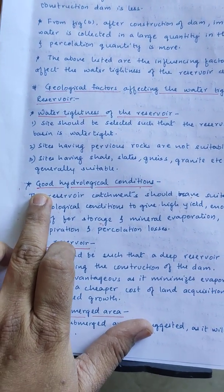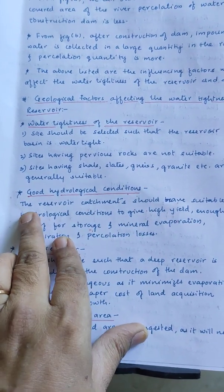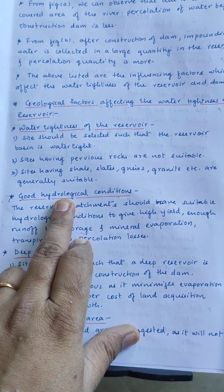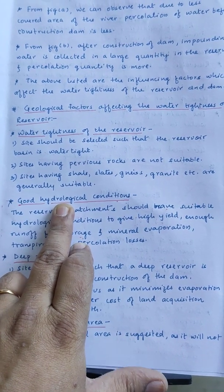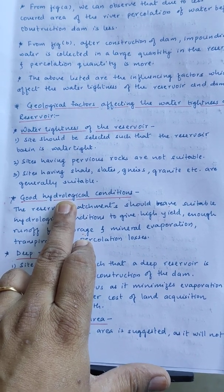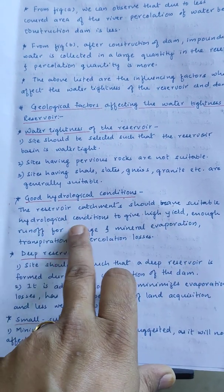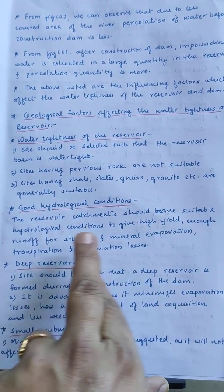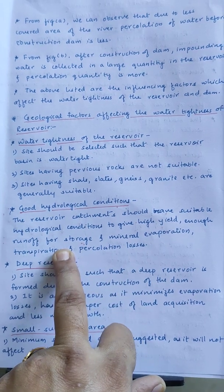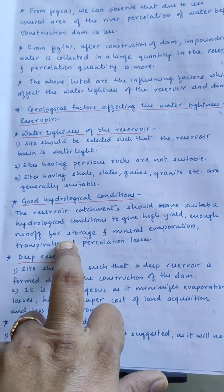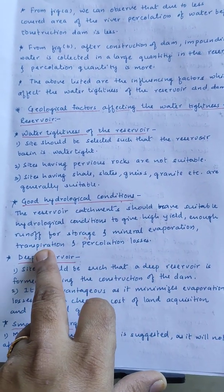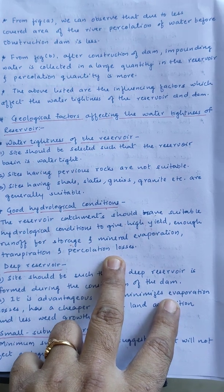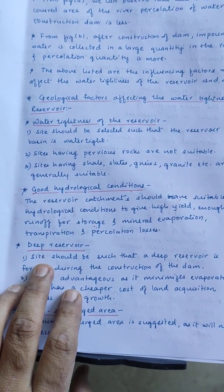The next factor is good hydrological conditions. This means the area should have good precipitation and permeable soil. The area should have agricultural land nearby. The reservoir catchment should have suitable hydrological conditions to give high yield and enough runoff for storage, so that water will be collected in the reservoir. Evaporation, transpiration, and percolation losses should also be considered. If percolation losses are not there, water will not reach the fields through the pores in the soil.